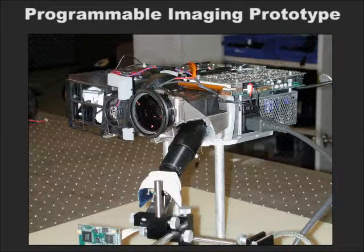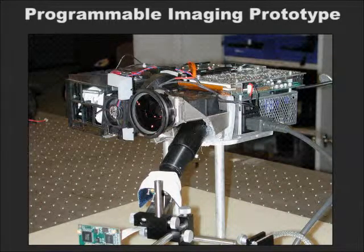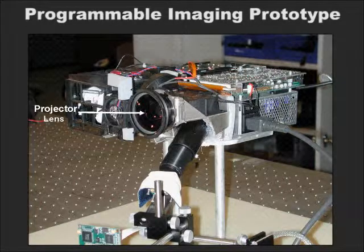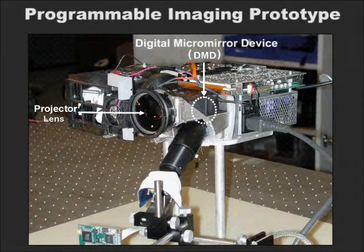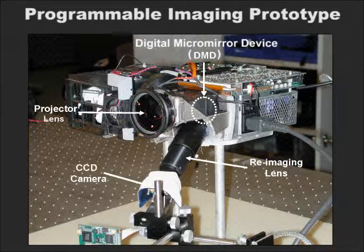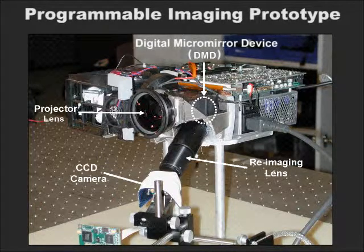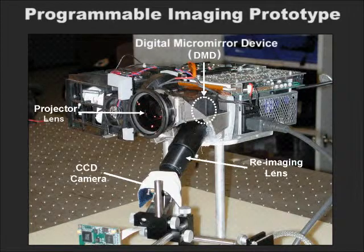We have implemented a programmable imaging system by re-engineering an off-the-shelf projector. The projector lens focuses an image of the scene onto the DMD. This optical image is modulated by the DMD before it is re-imaged by a CCD camera. This system can achieve several imaging capabilities by simply programming the spatial-temporal modulation function of the DMD.